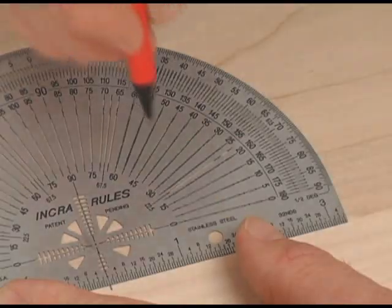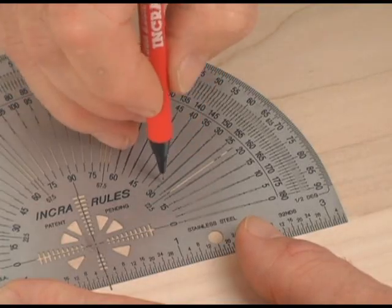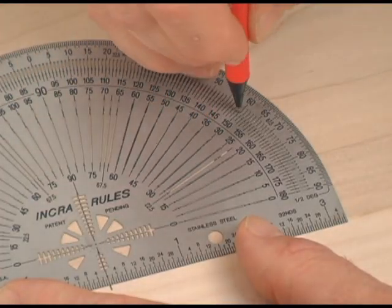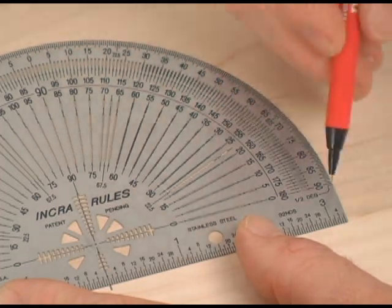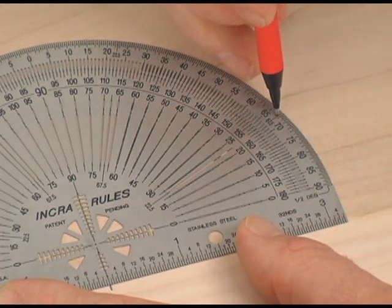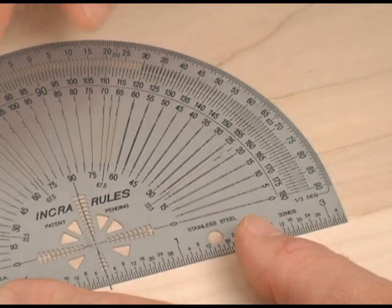Then place your mark at the interior five-degree scale, the outer one-degree scale, or the ultra-fine half-degree scale. You can't miss.